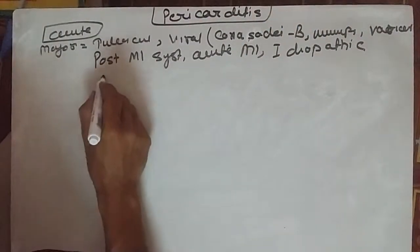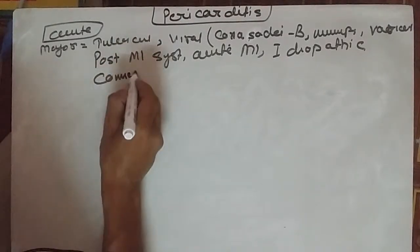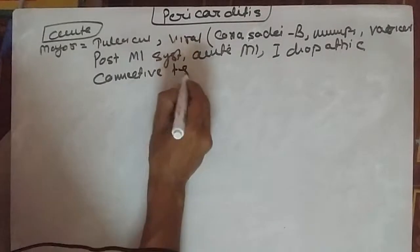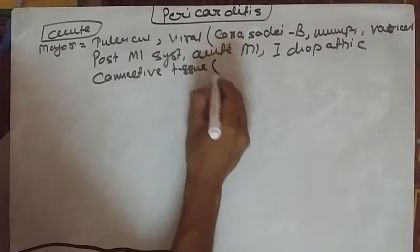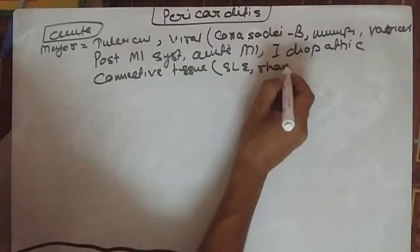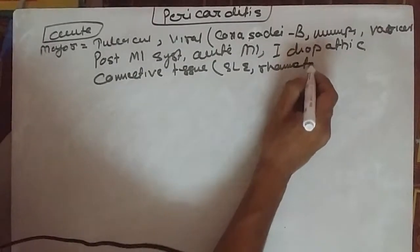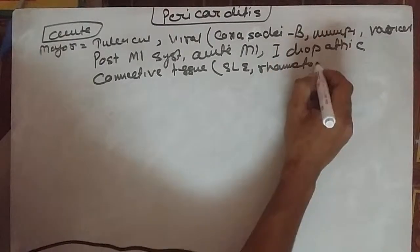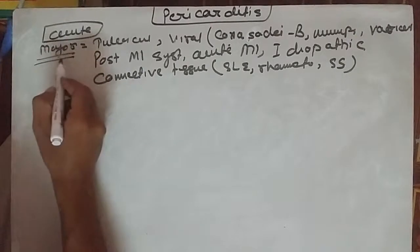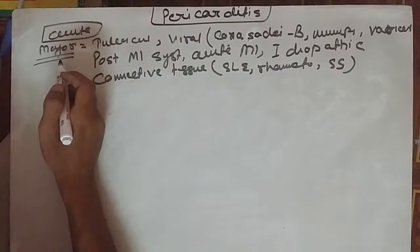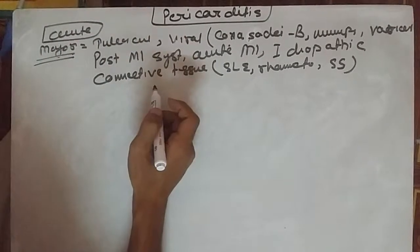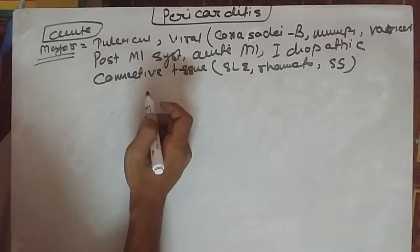It's also associated with connective tissue diseases like systemic lupus erythematosus, rheumatoid arthritis, or systemic sclerosis. There are less common causes like rheumatic fever, uremia, malignant disease, hypothyroidism, trauma, and post-surgical.